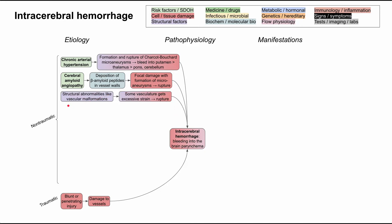Structural abnormalities can also form in the brain, including vascular malformations. When vascular malformations exist in a network receiving high-pressure blood flow, some malformations receive excessive strain and can rupture. So vascular malformations like AVMs and microaneurysms can rupture and cause intracerebral hemorrhage.